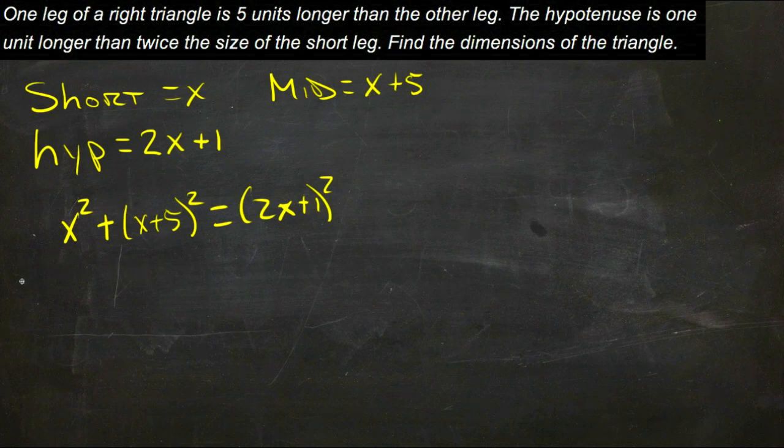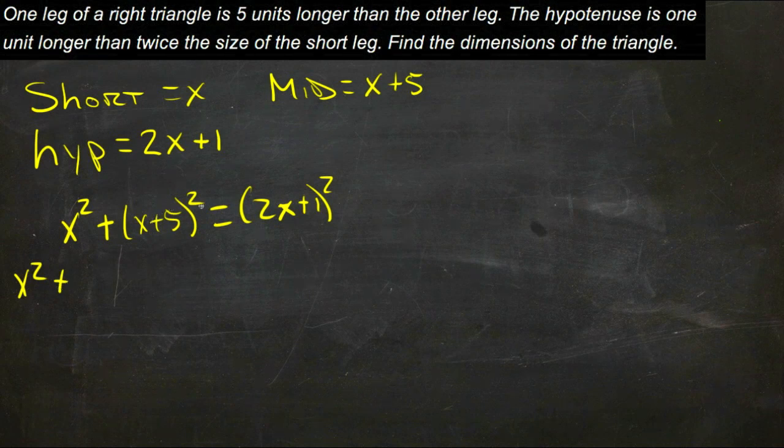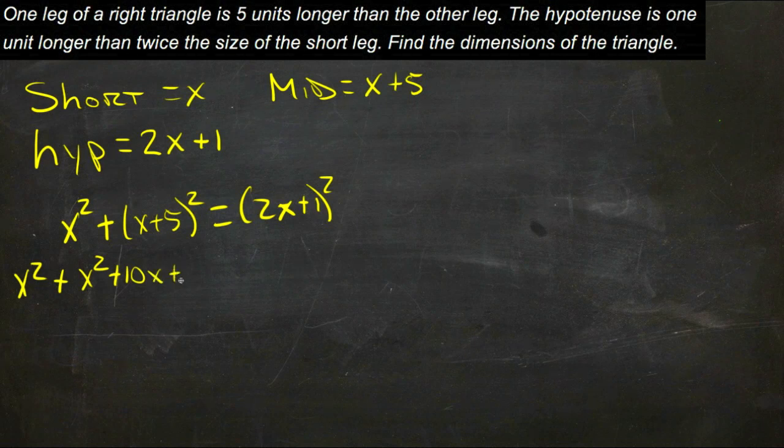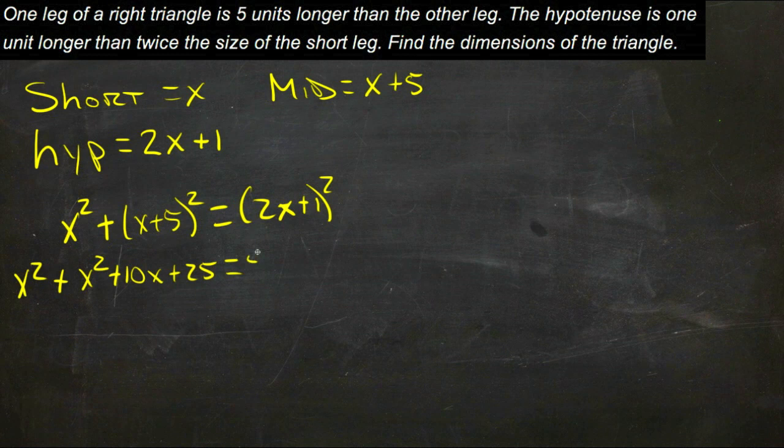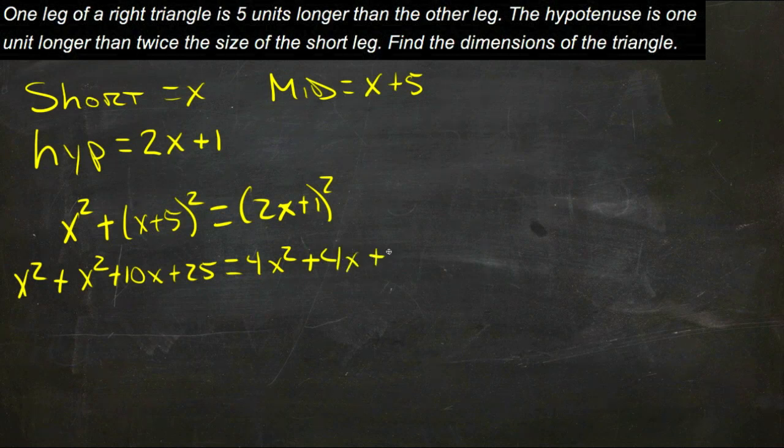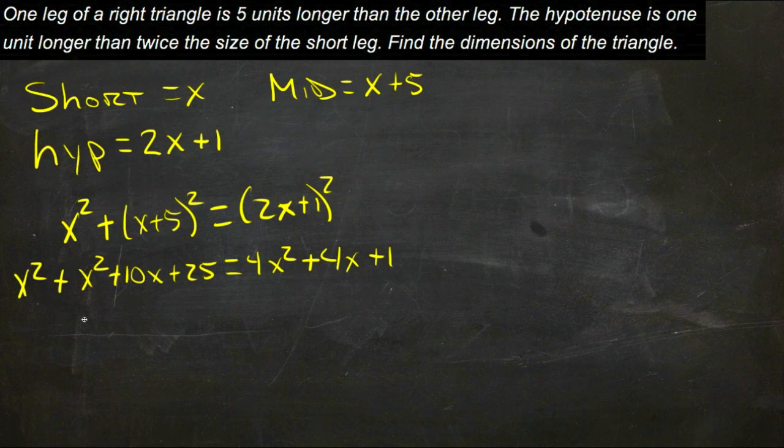So if we go through and simplify, we have x squared plus, if we foil this out, we get x squared plus 10x plus 25 equals 4x squared plus 4x plus one, and then put everything on one side, simplify.